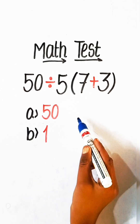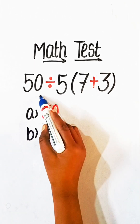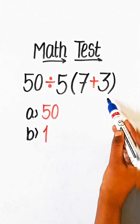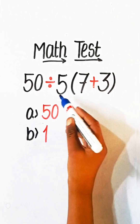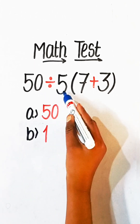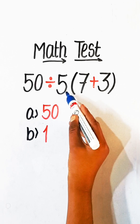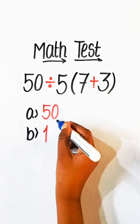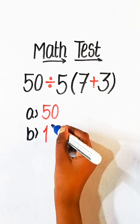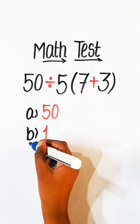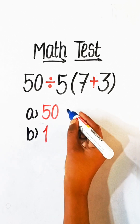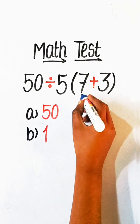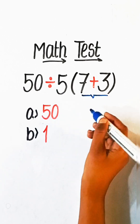Hello everyone. In this video we will solve this basic math equation: 50 divided by 5, under bracket 7 plus 3, equals to what? Option A: 50, Option B: 1. So let's solve this.